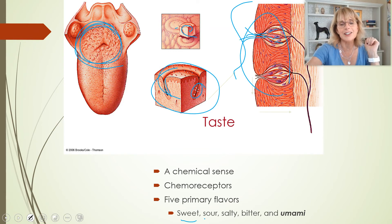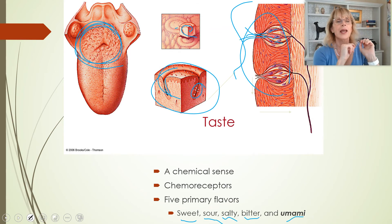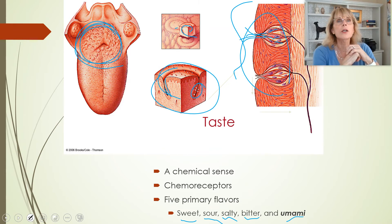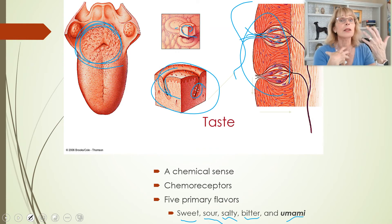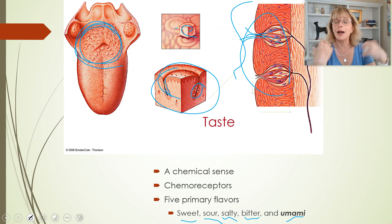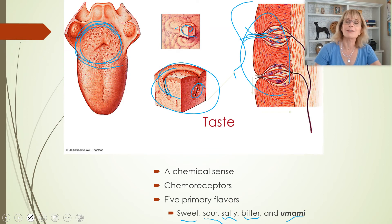The five flavors are sweet, sour, salty, bitter, and umami. They are looking for the ability to taste fat — they haven't found it yet. I think they should also look for the ability to taste metal, because I think I can taste metal.